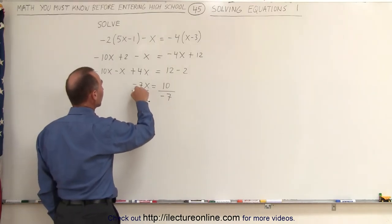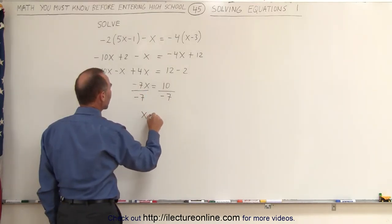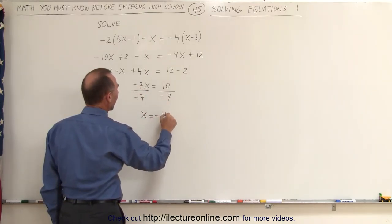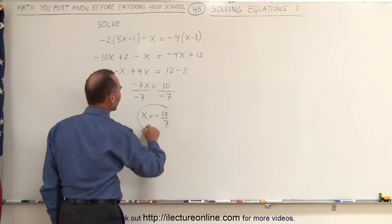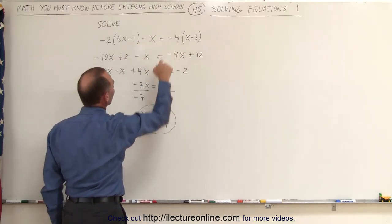Notice when we divide this into this, we simply get the variable x equals, on the right side, minus 10 divided by 7. And that's the solution to the original equation.